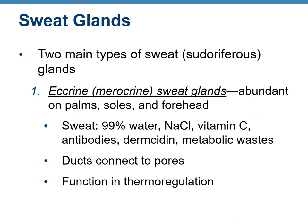There are two main types of sweat glands — also called sudoriferous glands. Merocrine sweat glands, specifically called eccrine glands, are abundant especially on the palms, soles, and forehead. They produce sweat, which is 99% water and also contains sodium chloride, vitamin C, antibodies, and some metabolic waste. As exocrine glands, they have ducts connecting to pores that open onto the skin surface. Their function is thermoregulation.